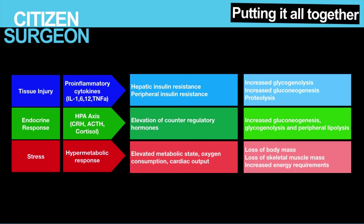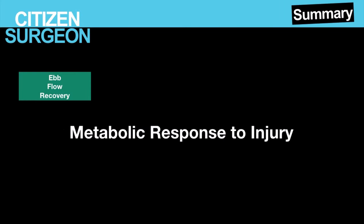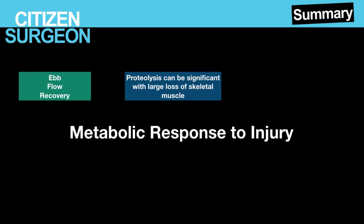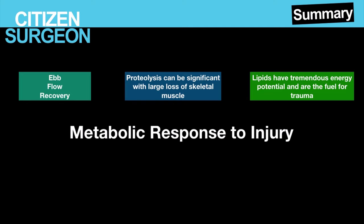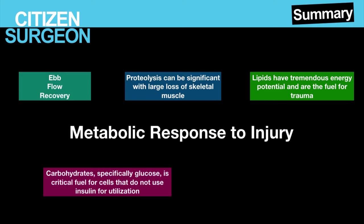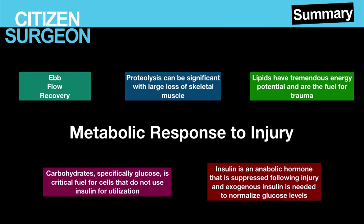To summarize: the metabolic response to injury includes an ebb, flow, and recovery — think of it like the tides. The inflammatory response leads to proteolysis, which can be severe, leading to significant losses of lean body mass and skeletal muscle. Lipids are the primary fuel for the body during trauma, including oxidation of fatty acids. Carbohydrates, in the form of glucose, are fuel for peripheral cells, inflammatory cells, and the cells of the wound. Finally, insulin is suppressed and its effects are blunted by the inflammatory response, leading to hyperglycemia.